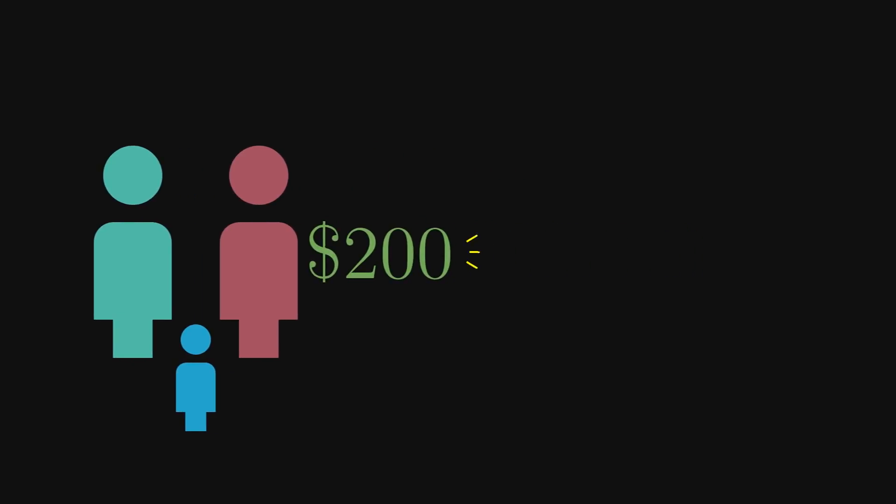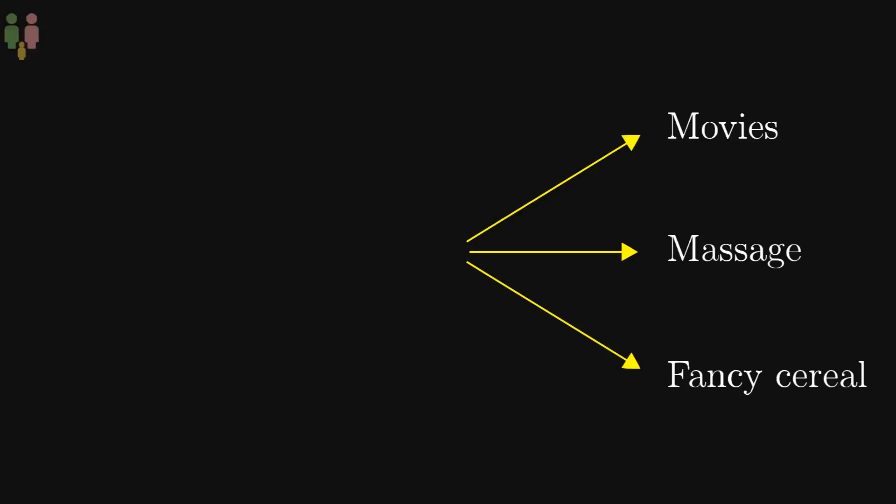This new disposable income creates opportunities for Larry and Mary to spend money on new things. With that extra cash, they can go to the movies, they could get a massage. Hell, they could even buy another box of handmade organic free range cornflakes. And this isn't just true of Larry and Mary, but of people everywhere.